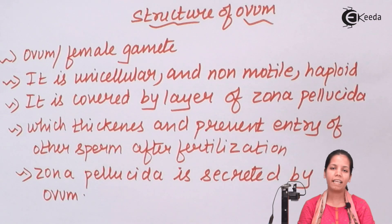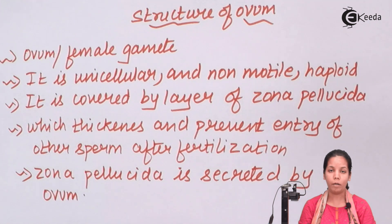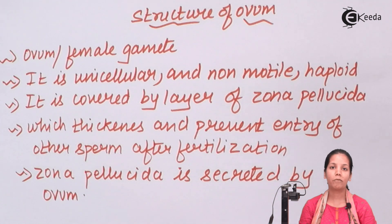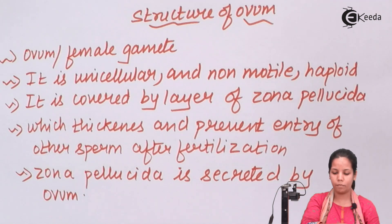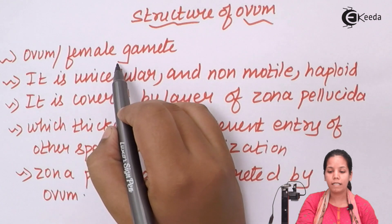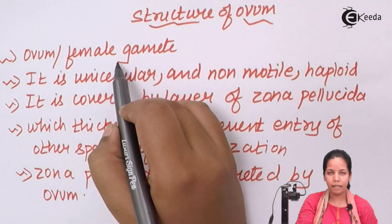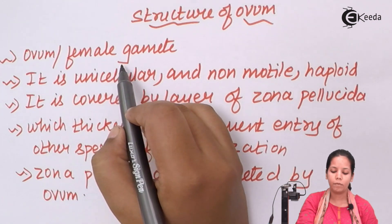Ovum, being the female gametophyte, is haploid but it is non-motile. When it fuses with a sperm, it leads to the process of fertilization, and finally a zygote — a new progeny or offspring — is formed. So ovum is also termed as female gamete, or simply an egg.